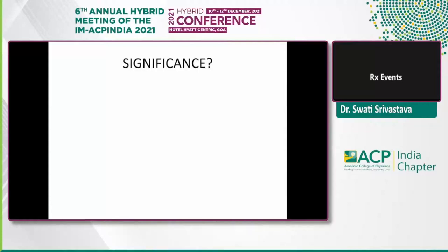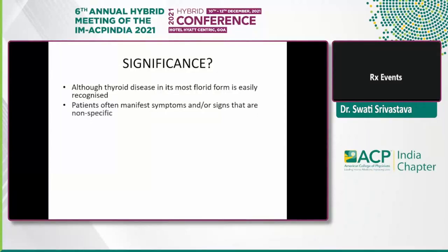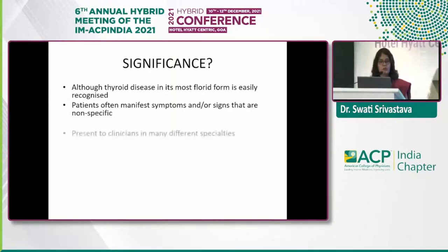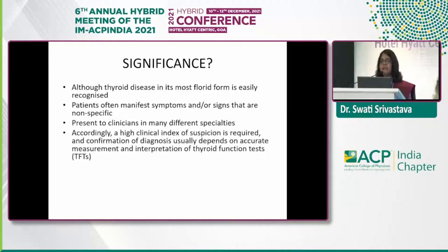We have so many tests — why do we talk so specifically about interpretation of thyroid function tests? Although thyroid disease in its most florid form is easily recognized, it's a very common disorder affecting 2 to 10% of the entire population. Yet patients often manifest with symptoms and signs that are many times non-specific, presenting to clinicians of different specialties — gynecology, dermatology, psychiatry, even orthopedic surgery. We need a high clinical index of suspicion and accurate measurement and interpretation of the thyroid function test.